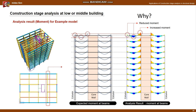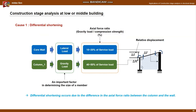Why is it different than expected? The first cause is differential shortening of column and wall. In the case of a wall, the lateral load is an important factor in determining the cross-section. Therefore, the ratio of compressive strength through axial force is generally about 15 to 20 percent, so it is very small.